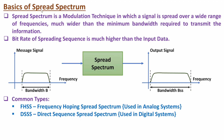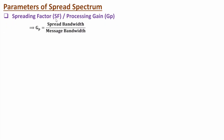Spread spectrum is used to increase the bandwidth of the message signal. In the case of digital systems, at the output side we will have a higher data rate compared to the message signal data rate. Now, the first parameter for analog systems is the spreading factor, also referred to as processing gain. Processing gain Gp is the ratio of spread bandwidth divided by message bandwidth. Since message bandwidth is lower than spread bandwidth, this Gp value will be way greater than unity.